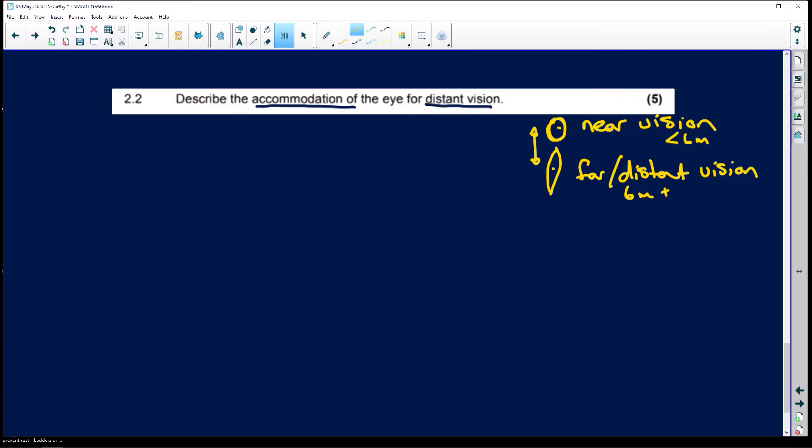So the rounder it is, the more refraction. The flatter it is, the less refraction, so the less the light will be bent. So when we talk about accommodation of the eye for distant vision, we're going to be looking at a nice long, flat lens.